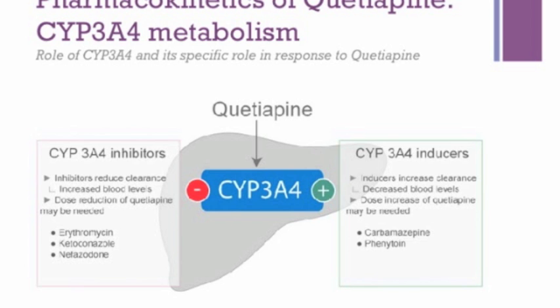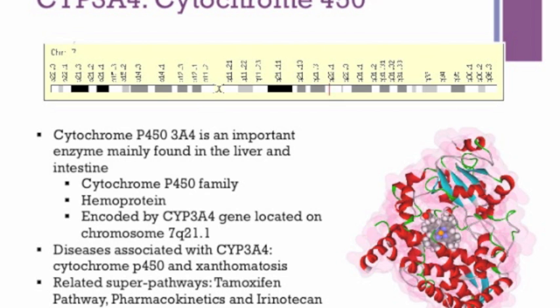Quetiapine is metabolized by the cytochrome P450, or CYP3A4, to an active metabolite, and drug interactions with inhibitors and inducers are likely to be significant. This diagram shows an example of the inhibitors and inducers of CYP3A4 and its effects with quetiapine. CYP3A4 is part of the cytochrome P450 family and is encoded by the gene located on chromosome 7Q21.1, as shown in this image.